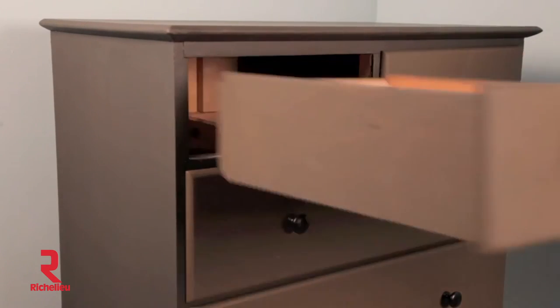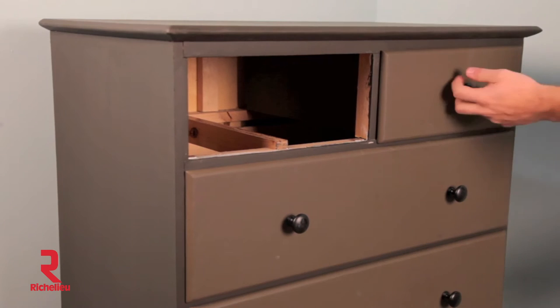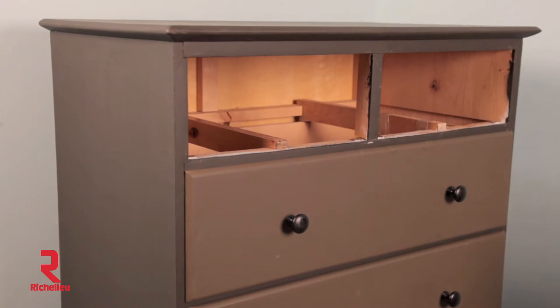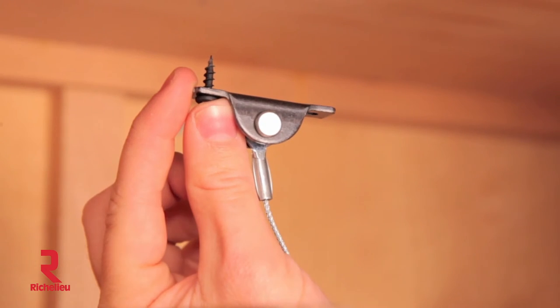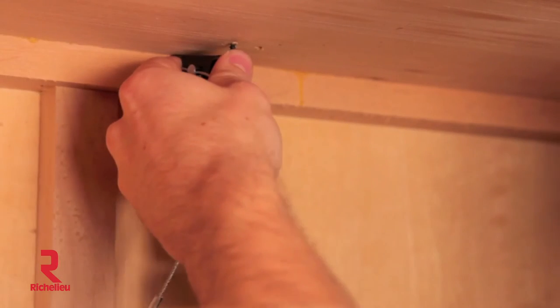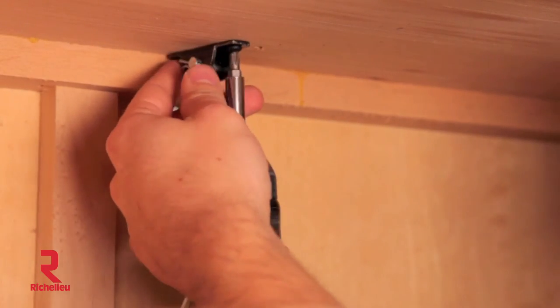Remove top drawers from the furniture piece if needed. Using the self-drilling 5 eighths inch screws, install bracket to the underside of the top of the furniture. Make sure the top of the furniture is at least 5 eighths inch thick.